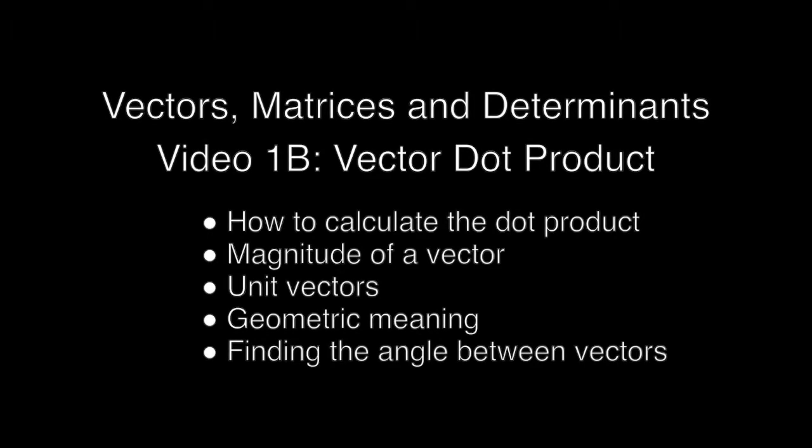Welcome to the second of these videos. We're going to look here at the vector dot product, also called the scalar product. We'll look at the magnitude of a vector and the meaning of unit vectors, the geometric meaning of the dot product, and finding the angle between vectors using the dot product.